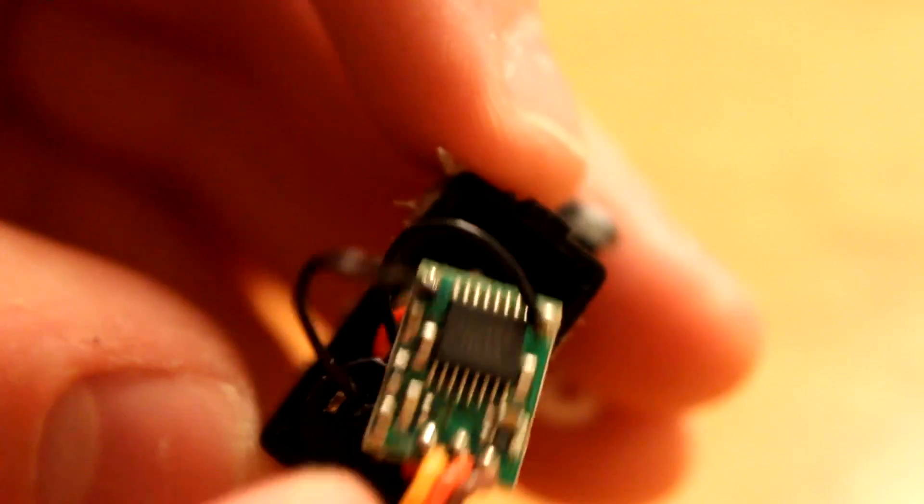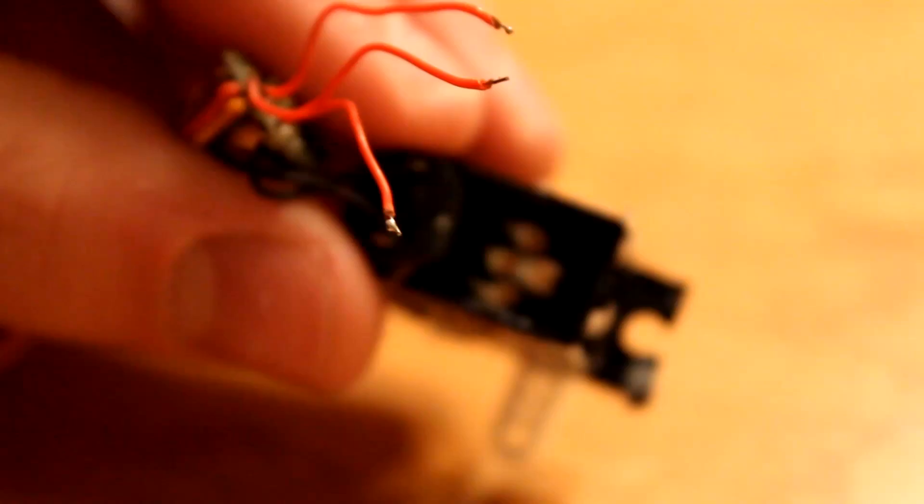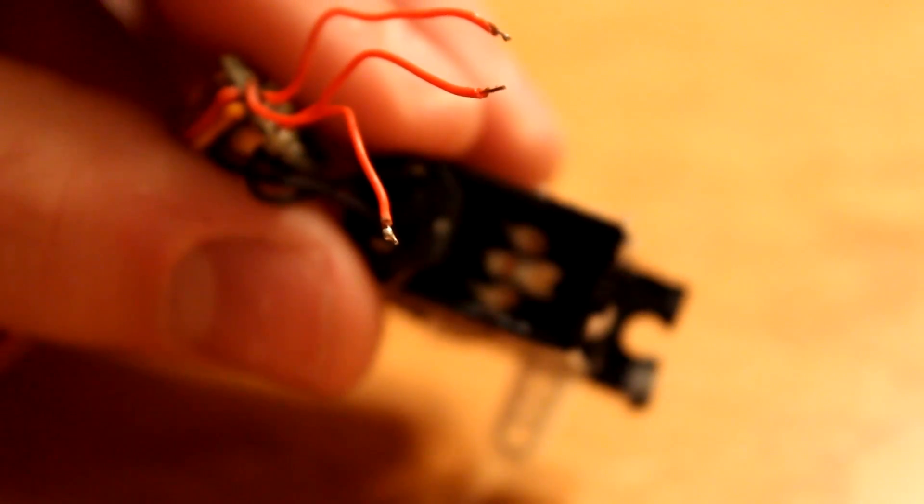Take the bottom part of the good servo off and pull the board out of the way so you can unsolder the three wires from the potentiometer. Once you have desoldered the wires off the good servo's potentiometer...